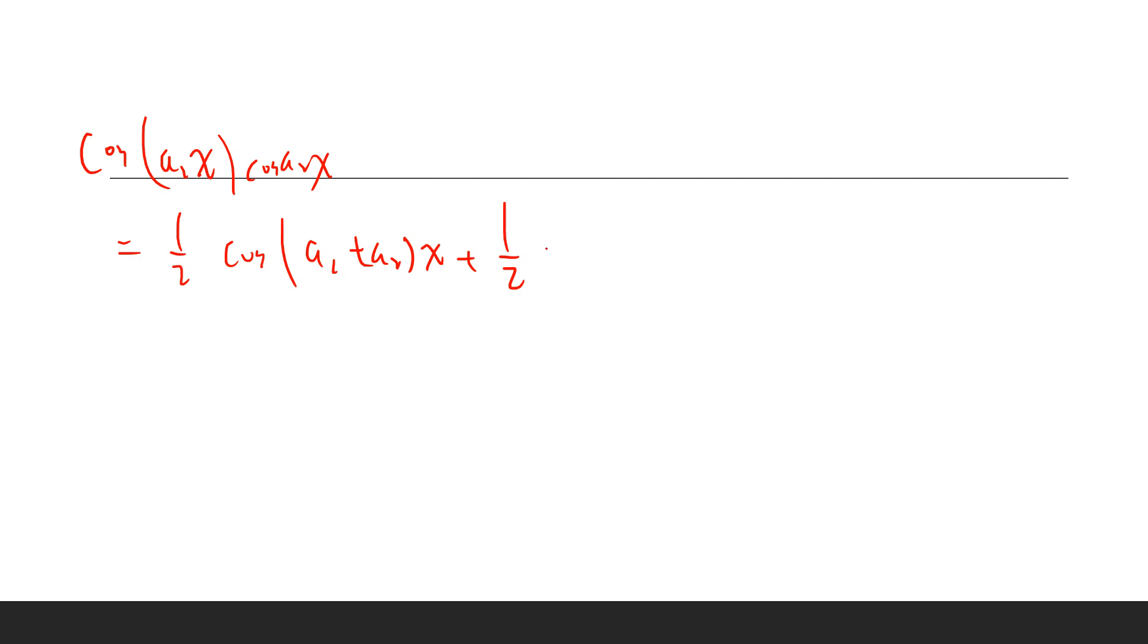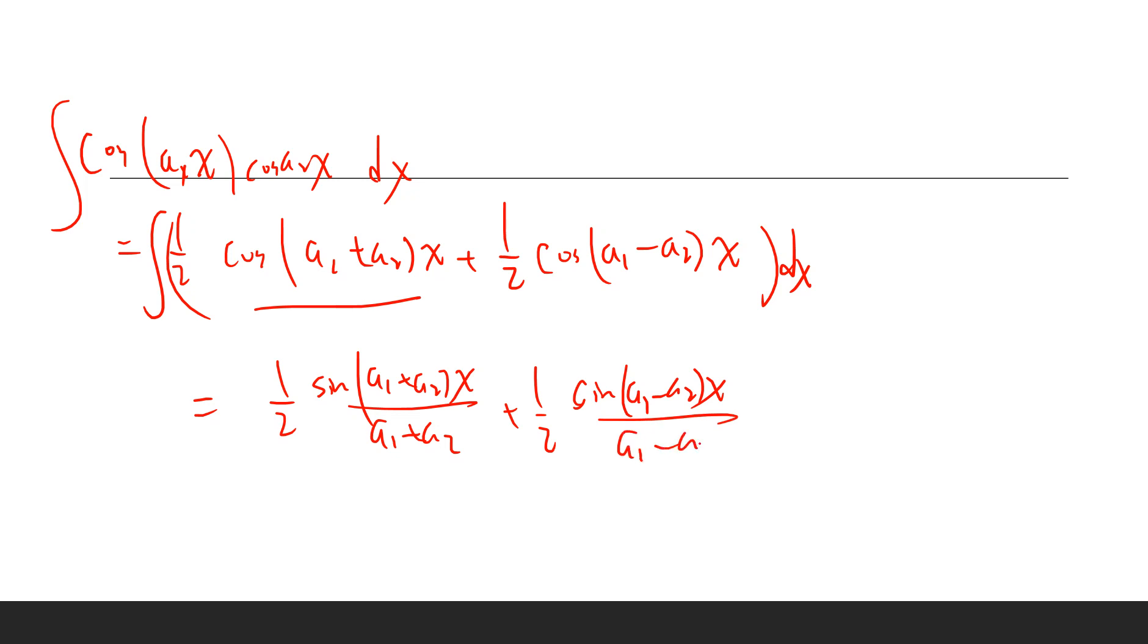When we do integration, we can just do integration dx. This is cosine, so the integration is sin(a1 + a2)x divided by (a1 + a2) plus half sin(a1 - a2)x divided by (a1 - a2), because the differentiation with respect to x of sine is cosine.